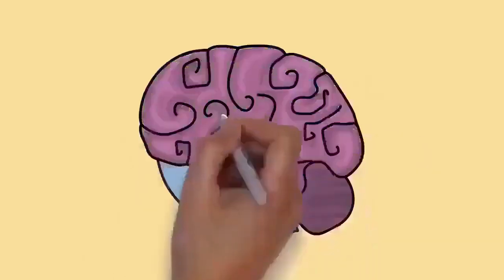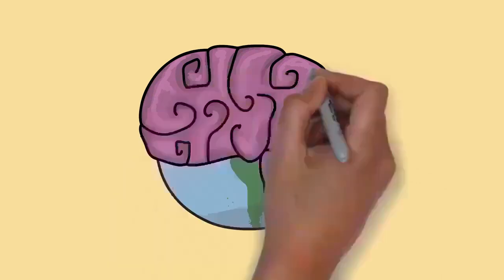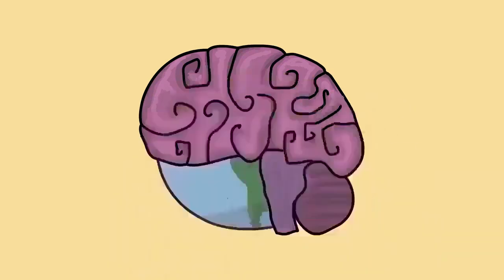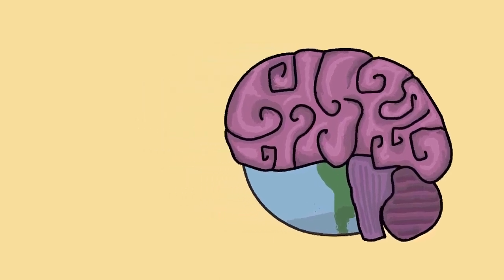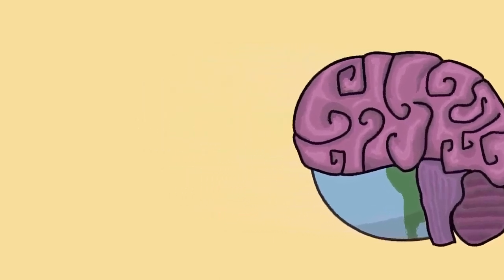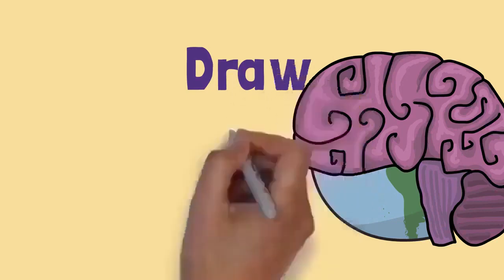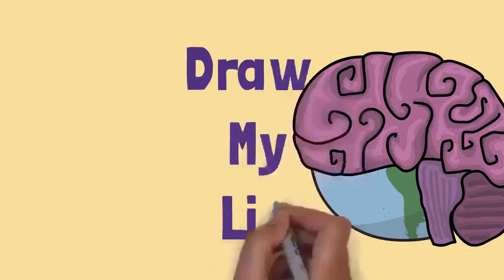It is the most complex organ in a vertebrate's body. In a human, the cerebral cortex contains approximately 14 to 16 billion neurons, and the estimated number of neurons in the cerebellum is 55 to 70 billion. Each neuron is connected by synapses to several thousand other neurons.